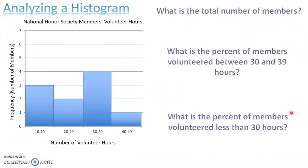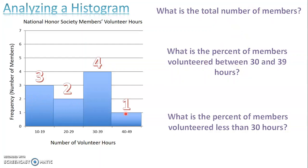Now let's look at analyzing a histogram using percentages. This example shows National Honor Society members' volunteer hours. Between 10 and 19 hours there are three members, between 20 and 29 hours there are two members, between 30 and 39 hours there are four members, and so on. The total number of members is 3 plus 2 plus 4 plus 1, which equals 10 members altogether.